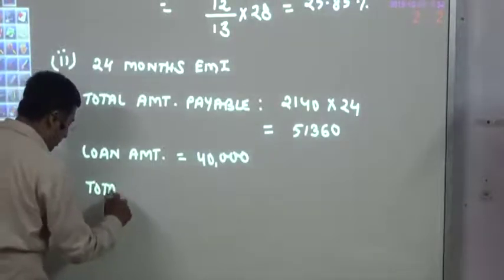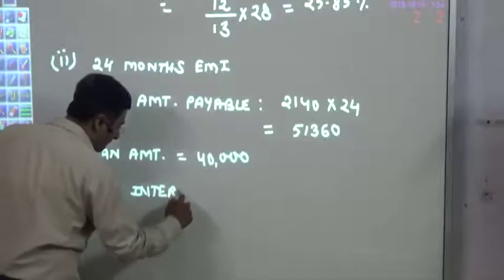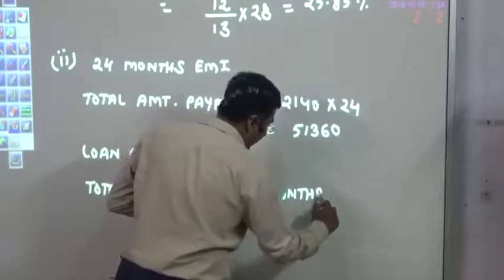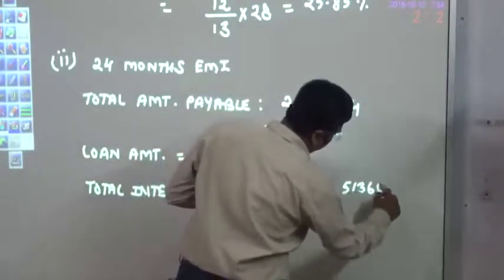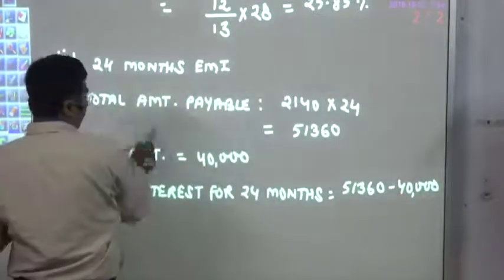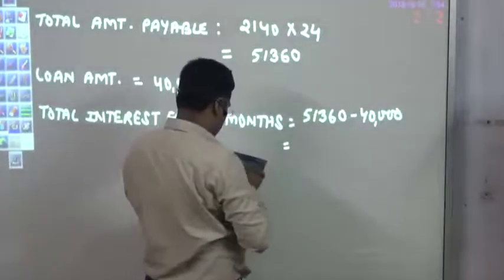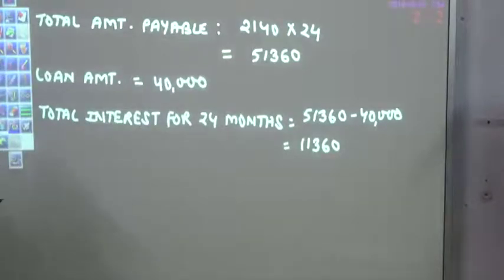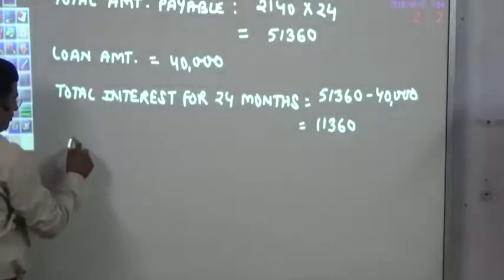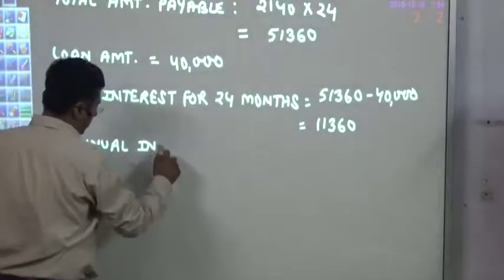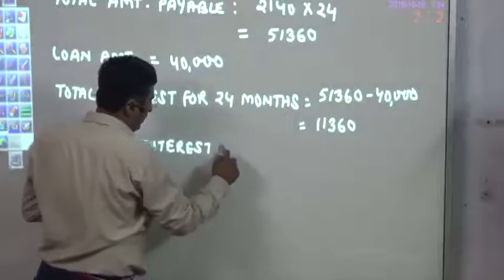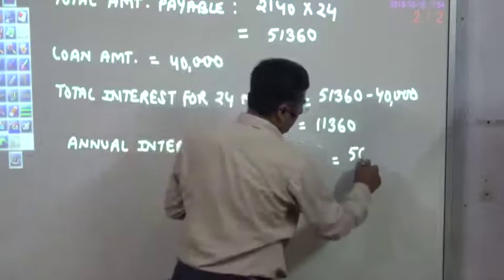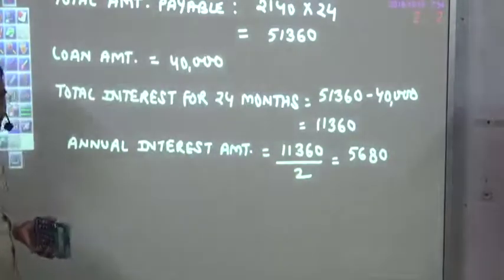So total interest for 24 months is 51,360 minus 40,000, that is 11,360. To find the annual interest amount at flat rate, we divide by 2 (since it covers 2 years): 11,360 divided by 2 equals 5,680 per year.